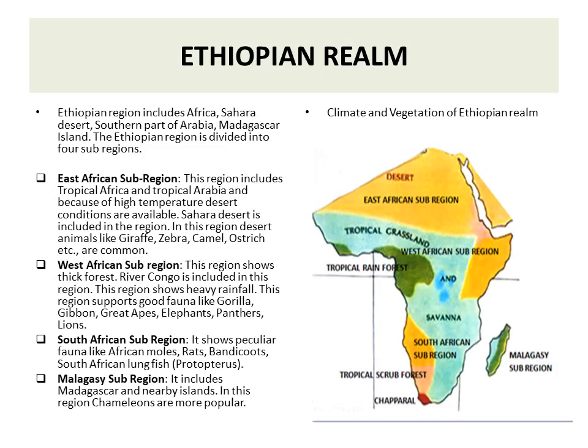The Ethiopian realm includes Africa, the Sahara Desert, the southern part of Arabia, and Madagascar Island. It is divided into four sub-regions: the East African sub-region, where desert is present; the West African sub-region, which has thick rainforest; the South African sub-region, where savanna and scrub forest are present; and the Malagasy sub-region, which also has rainforest and savanna.